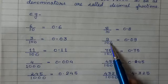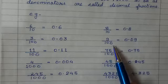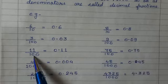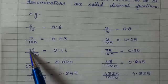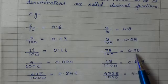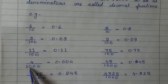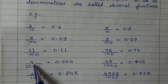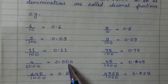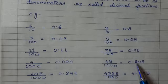Here, 2 zeros are there in the denominator. Therefore, 9 should be written in the form of 2 digits. Therefore, the decimal number is 0.09. Again, the denominator has 2 zeros and it is already in 2-digit form. Therefore, the decimal number is 0.11. Similarly, it is 0.75. 3 zeros are there in this denominator. Therefore, 4 should be written in the form of 3 digits without changing the value. Therefore, the decimal number is 0.004. It is 45 upon 1000 — 3 zeros — therefore it is 0.045. 245 upon 1000 is 0.245, and 4325 upon 1000 is 4.325.